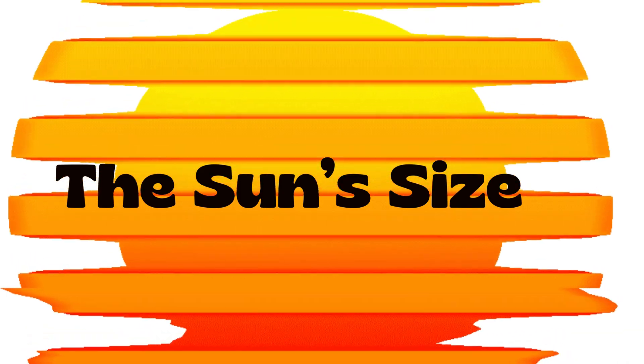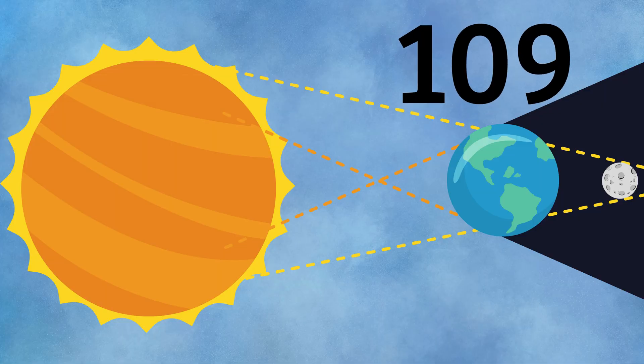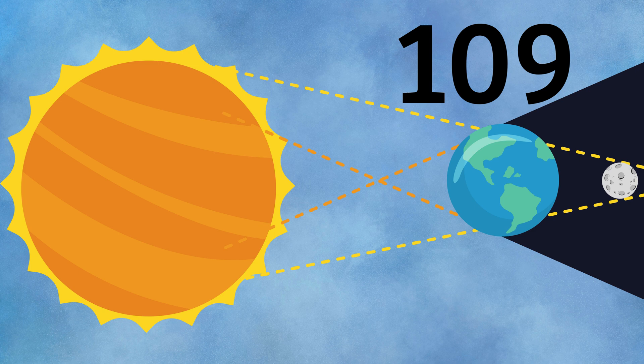The sun's size. Did you know that the sun is very big? It's about 109 times bigger than planet Earth. You can imagine it like a gigantic ball, and we live on a small ball next to it.